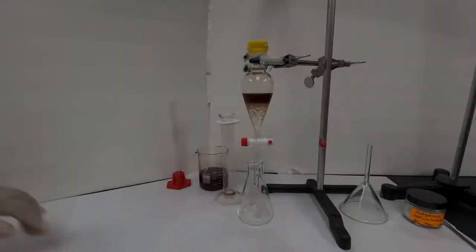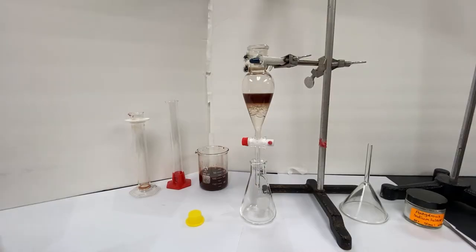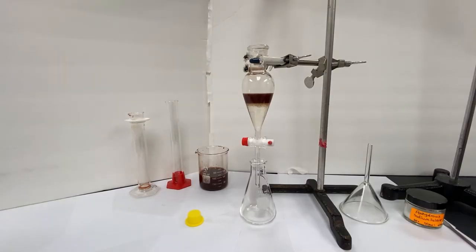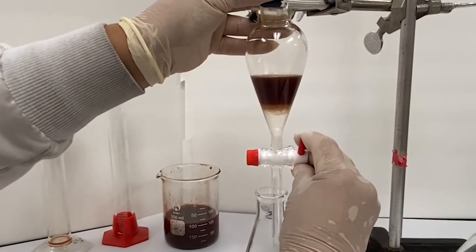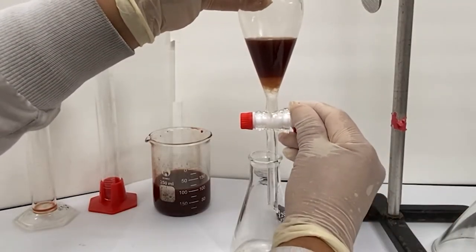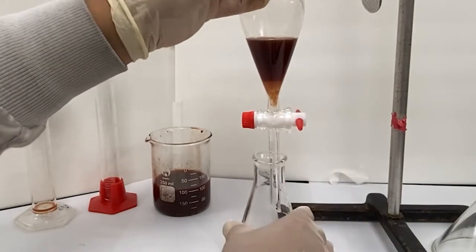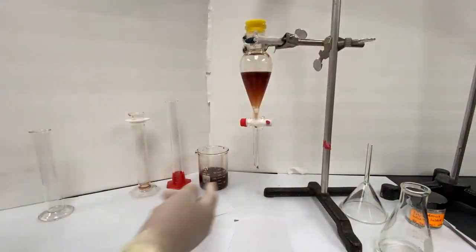This can take a few minutes, so be patient. If bubbles form between the layers, you can use a clean glass rod to pop the bubbles and speed the process up. Collect the bottom layer, which in this case is the organic layer, by opening the petcock and letting it drain into your collection vessel. You can collect it quickly at first, but be sure to slow down as the tea layer gets closer to the bottom. Repeat the extraction with DCM one to two more times, collecting into the same vessel.